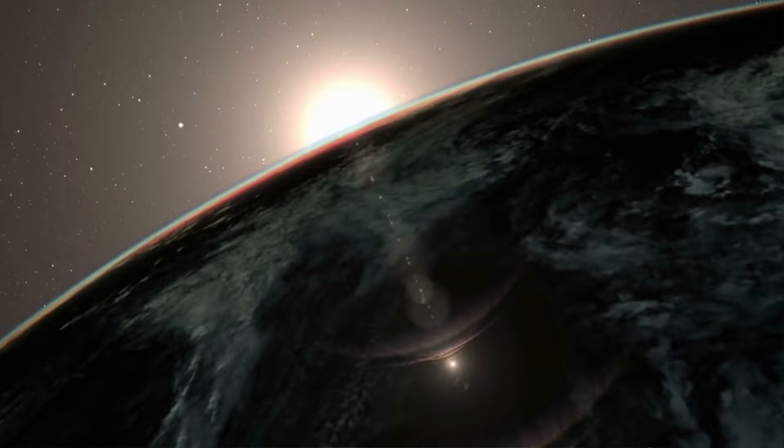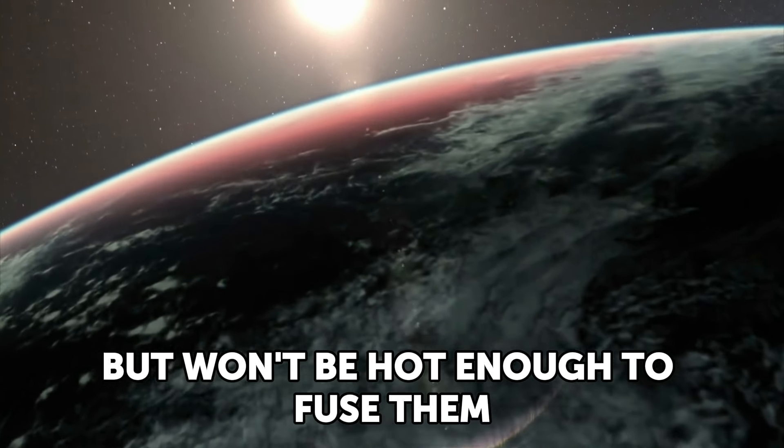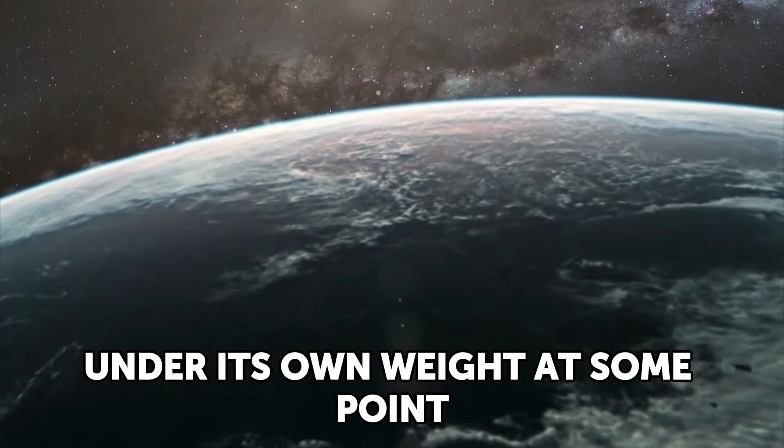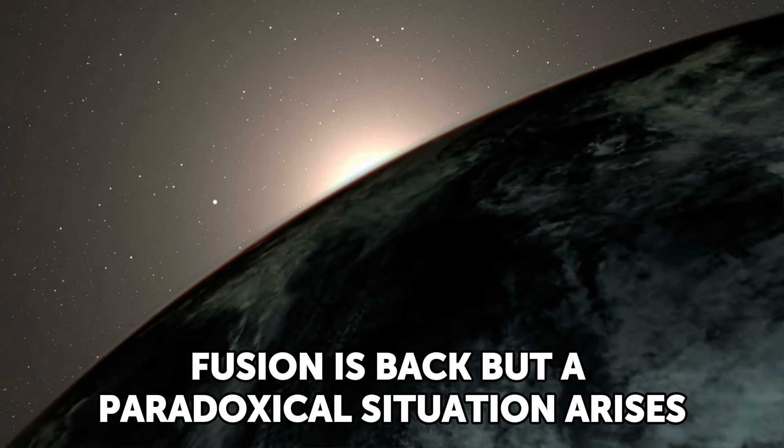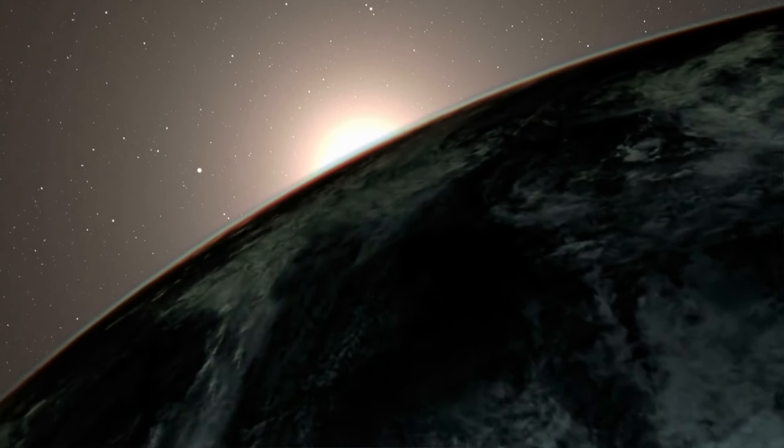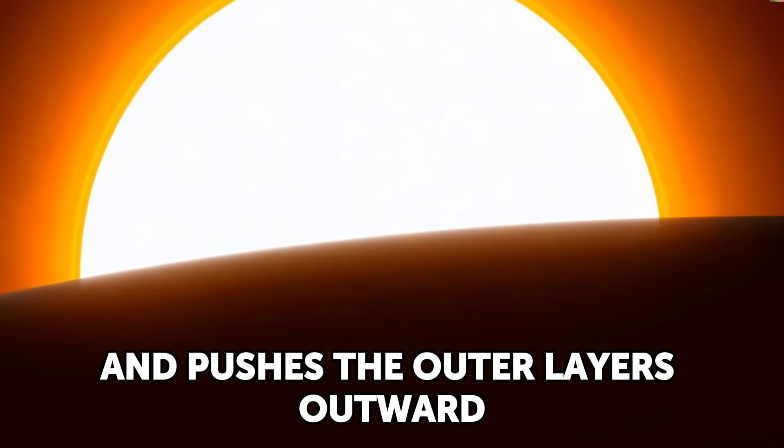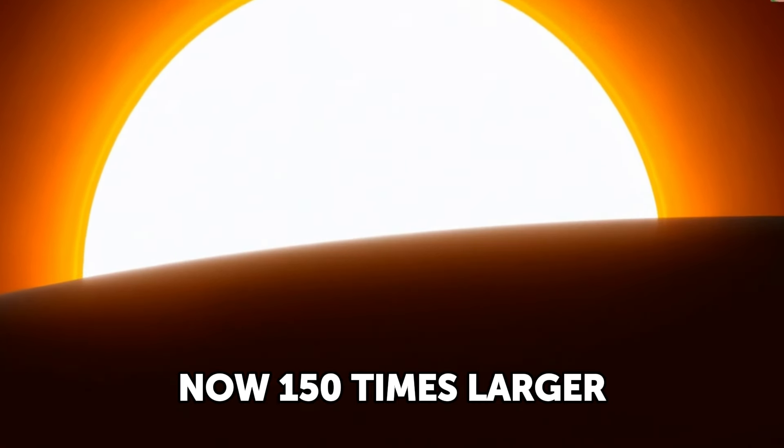But let's get back to the Sun. Five billion years have passed, and the hydrogen in the core is almost gone. By then, the core will consist mainly of helium atoms, but won't be hot enough to fuse them, so it will no longer generate energy, and nothing will prevent it from collapsing under its own weight. At some point, a spherical shell around the core where there is still hydrogen will heat up enough to start fusing. Fusion is back, but a paradoxical situation arises. As the Sun's core collapses, the spherical shell generates more and more energy and pushes the outer layers outward.